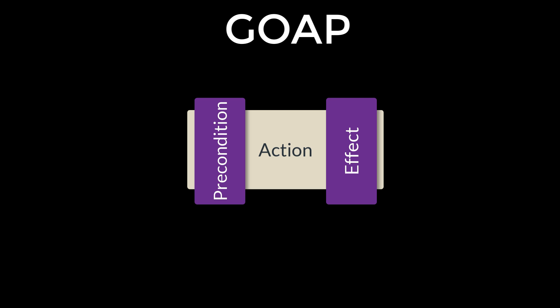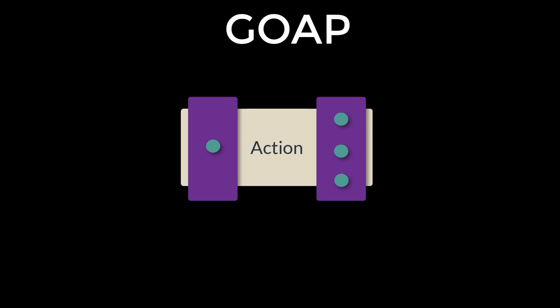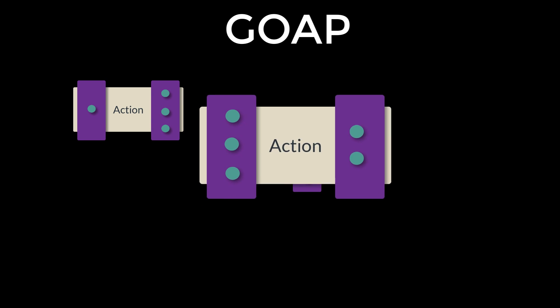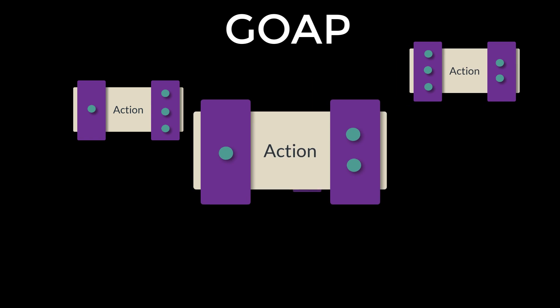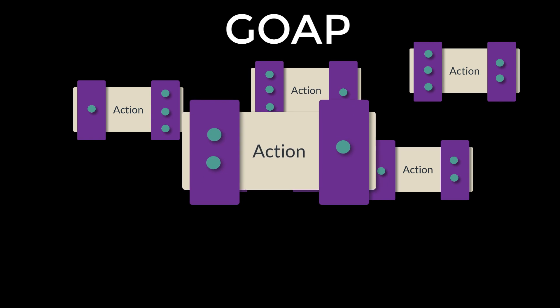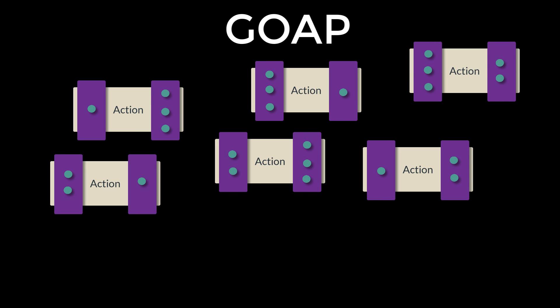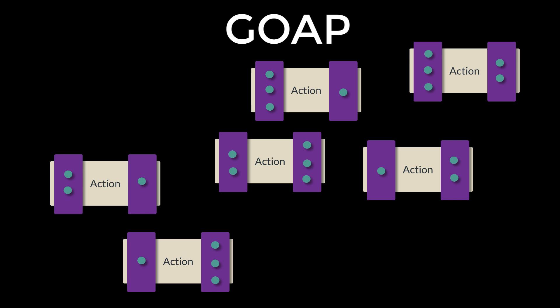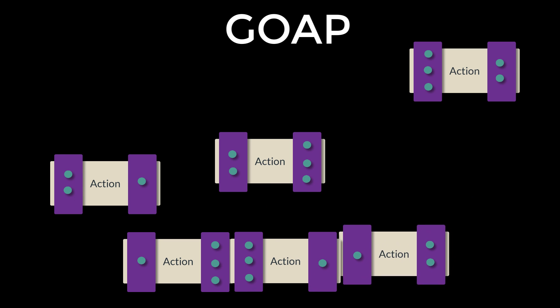Every action in GOAP has a precondition and an effect. The precondition is a state that must be met before the action can take place. The effect is how the action leaves the state of the agent or the world after it has occurred. A set of actions forms a kind of puzzle or set of dominoes where the preconditions can be matched with effects and the effects match with preconditions to create action chains.